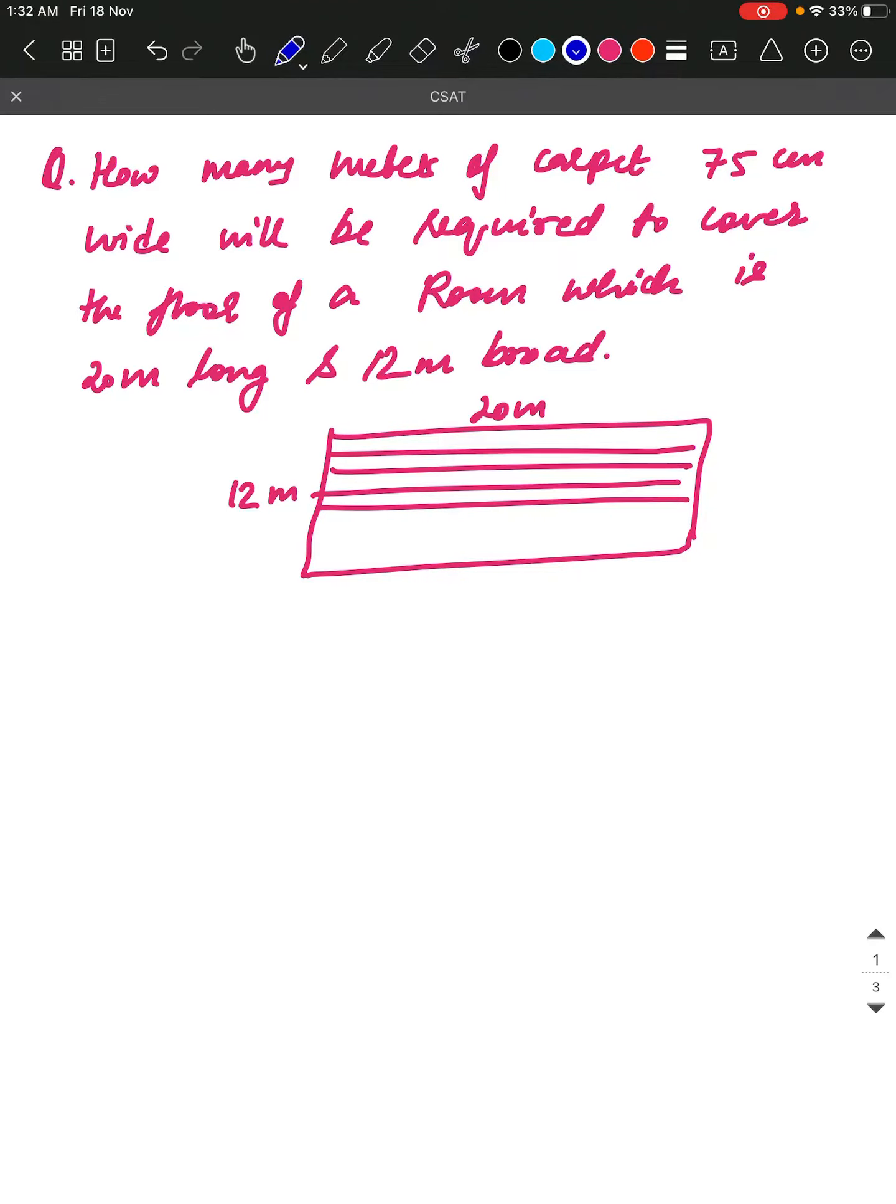The question is: how many meters of carpet 75 cm wide will be required to cover the floor of a room which is 20 meters long and 12 meters wide? The carpet is 75 cm wide - how much do we need to cut and cover it?